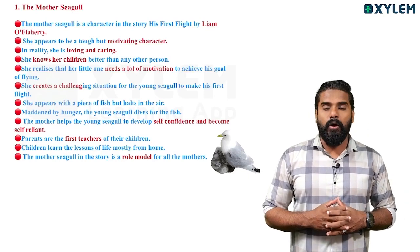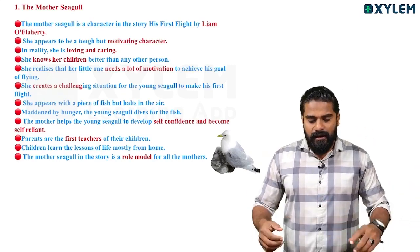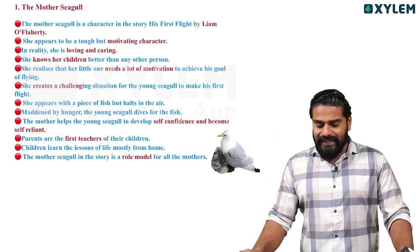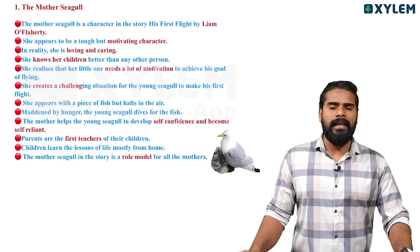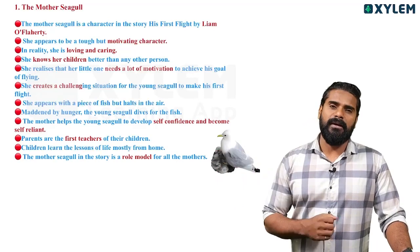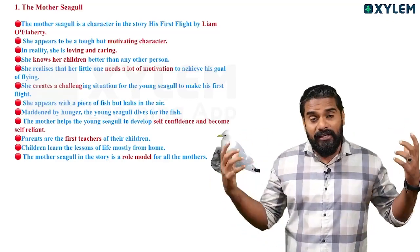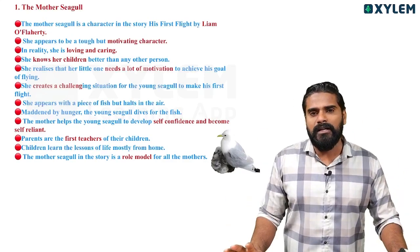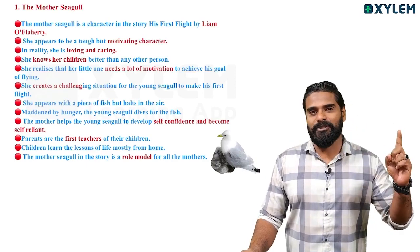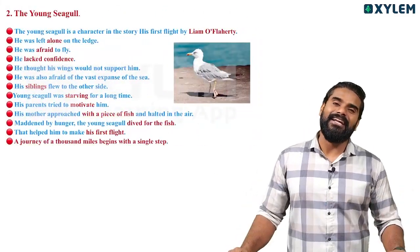Parents are the first teachers of their children. Children learn the lessons of life mostly from home. Parents are the first teachers — the young seagulls learn the lessons from their parents. Mother Seagull in the story is a role model for all mothers.